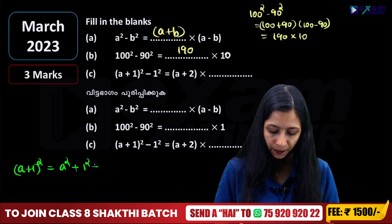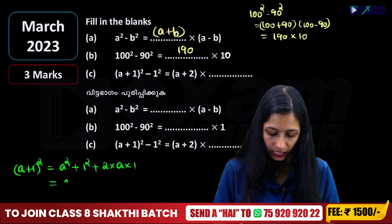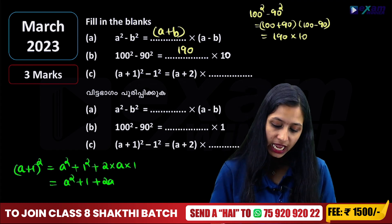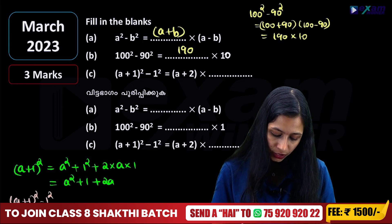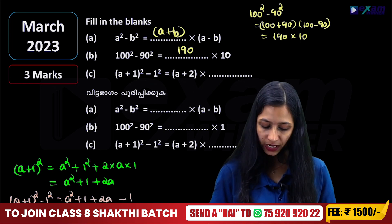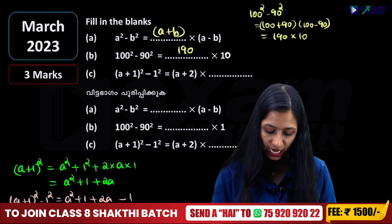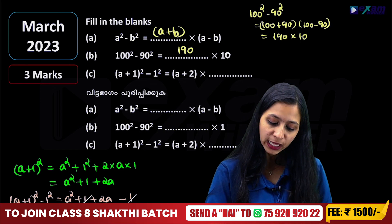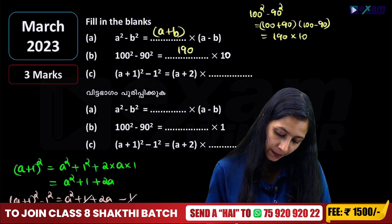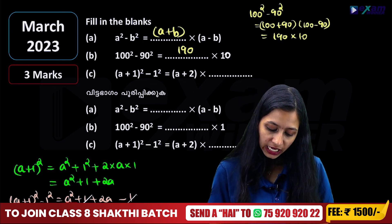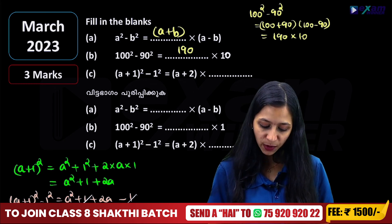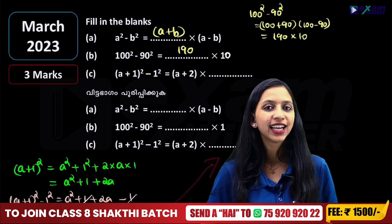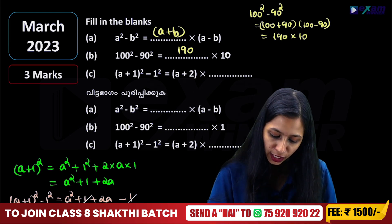2ab, that is 2 into a into 1. Here we get a² + 1 + 2a. We get (a+1) whole square. We subtract 1 square — that is (a+1) whole square minus 1 square, which equals a² + 1 + 2a subtract 1.